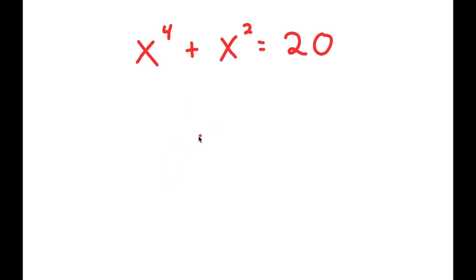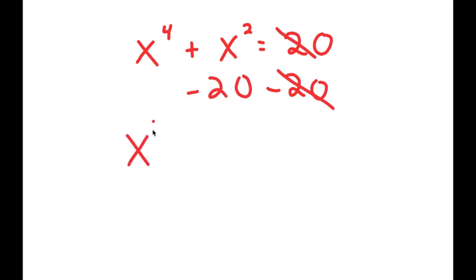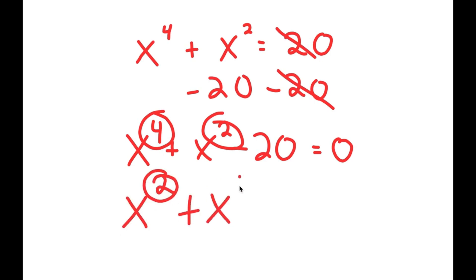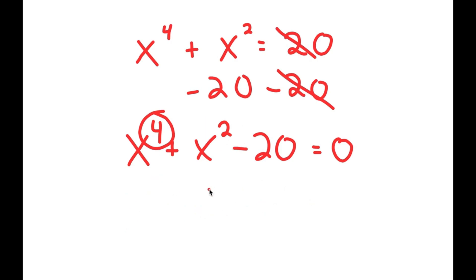In this next equation, I have x to the power of 4 plus x squared is equal to 20. To solve this, I'll first subtract 20 from both sides so all terms are on one side, giving x^4 plus x^2 minus 20 equals 0. This may look like a quadratic, but it's not — the primary term has power 4, followed by power 2, unlike a standard quadratic with powers 2 and 1.